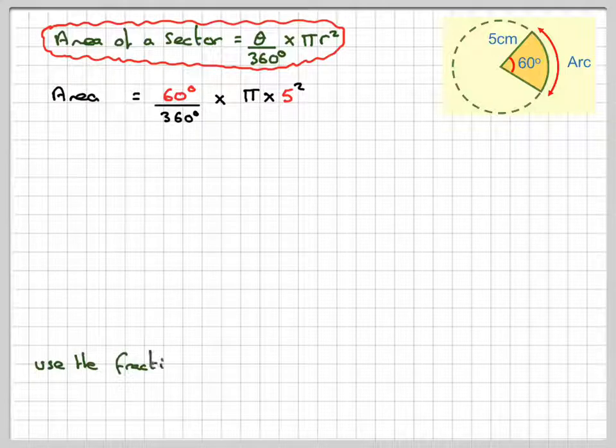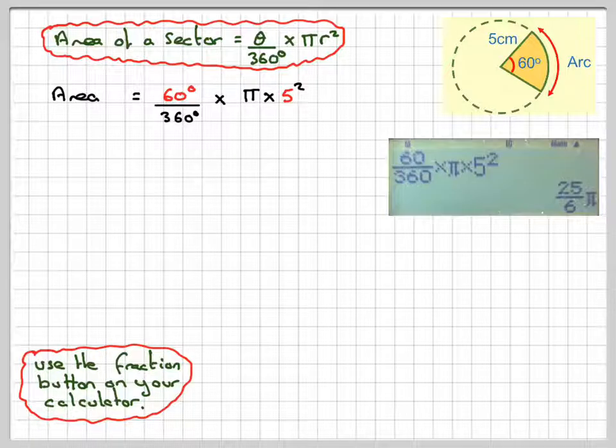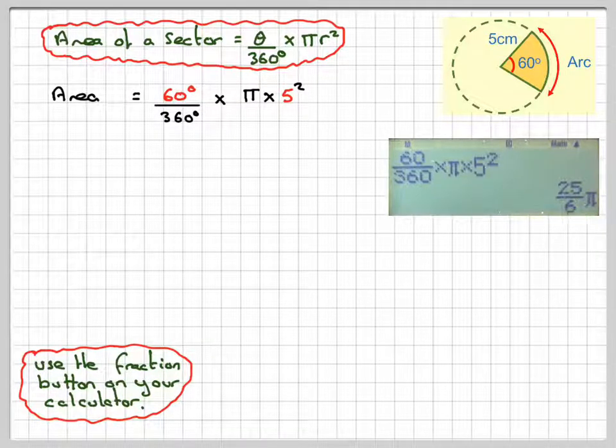Again, use the fraction button on your calculator, write it exactly as it is. So you're going to get 60 over 360 times pi times 5 squared. Don't forget to square the 5. It gives an exact answer of 25 pi over 6.